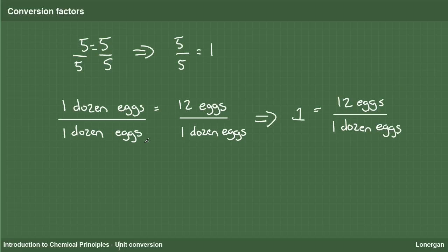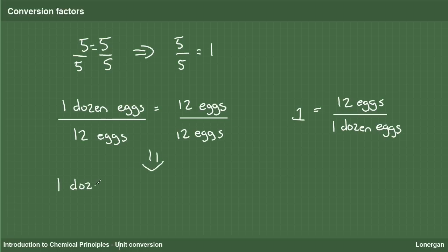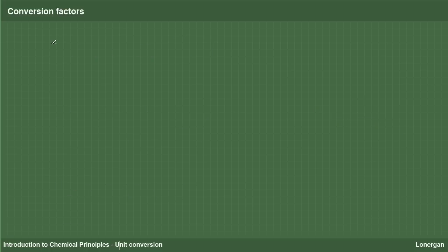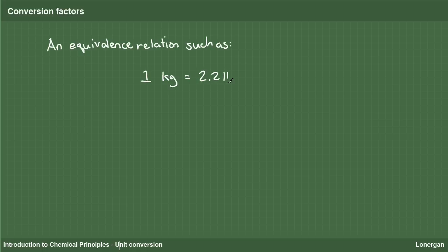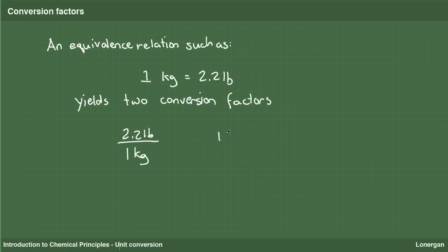What if we divide by 12 eggs instead of 1 dozen? In this case we would get the conversion factor 1 dozen eggs over 12 eggs, which again equals 1. An equivalence relation such as 1 kilogram equals 2.2 pounds yields two conversion factors. Dividing both sides by 1 kilogram yields the conversion factor 2.2 pounds over 1 kilogram. Dividing by 2.2 pounds yields the conversion factor 1 kilogram over 2.2 pounds. There are two important points to remember: first, they are reciprocals, and second, they both equal 1.